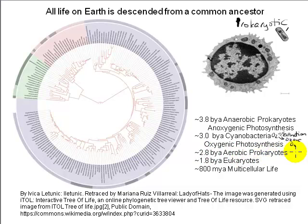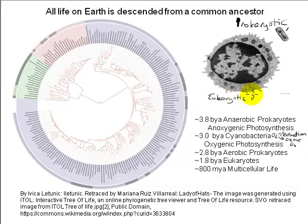By about 2.8 billion years ago, evidence suggests that some organisms had emerged that could not only survive in the presence of oxygen, but could actually use its oxidizing power to obtain energy — these were the aerobic prokaryotes. It's not until around 1.8 billion years ago that complex cells emerged, referred to as eukaryotic cells, much larger than the prokaryotes with extensive internal compartmentalization and specialization.